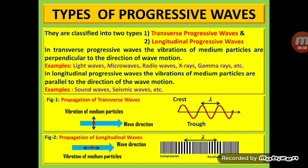Progressive waves can be further classified into two categories: transverse progressive waves and longitudinal progressive waves. In transverse progressive waves, the vibrations of the medium particles are perpendicular to the direction of wave motion, as shown in Figure 1. These waves advance through the medium in the form of crests and troughs. A crest is the maximum point of upward displacement of the medium, whereas the trough is the maximum point of downward displacement. Some examples for transverse waves are light waves, microwaves, radio waves, etc.